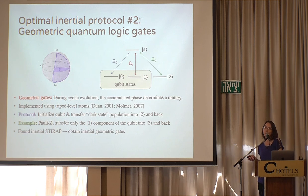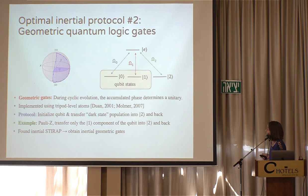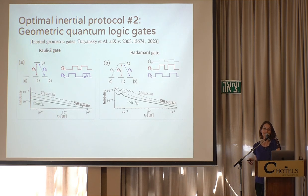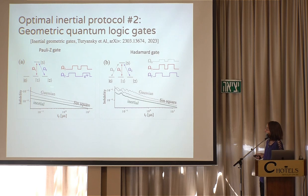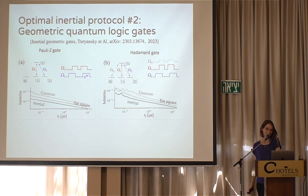Using our inertial STIRAP protocol for the forward and return steps, we have an inertial geometric gate. The results are very similar to what we saw for STIRAP: infidelity as a function of protocol duration, comparing standard Gaussian, sine-squared pulses, and our inertial analytic solution. For a Pauli-Z gate, we modify the phase of the second field in the last STIRAP step. The Hadamard gate is more complicated, but it works similarly.